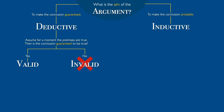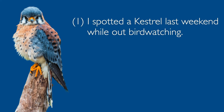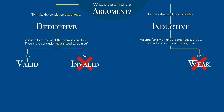This same pattern repeats itself on the inductive side, only now the requirement for success has a lower bar. Assume for a moment the premises are true — then is the conclusion probably true? If not, we say the argument is weak. For example: I spotted a kestrel last weekend while out birdwatching, so we'll probably spot one this weekend too. This premise, all by itself, just doesn't provide enough information to make it likely we'll see a kestrel. It's a weak argument — it fails at its aim of making the conclusion probable.